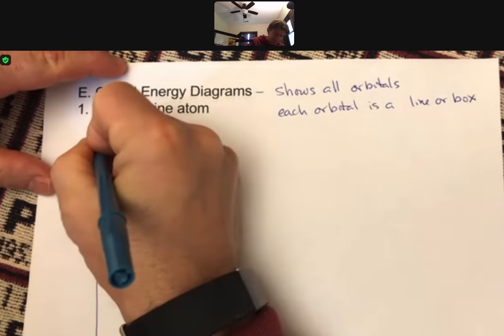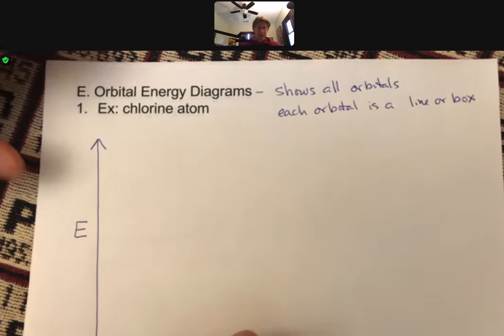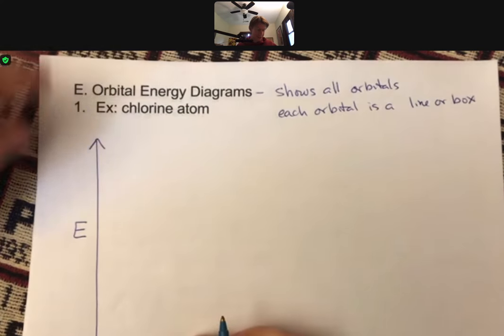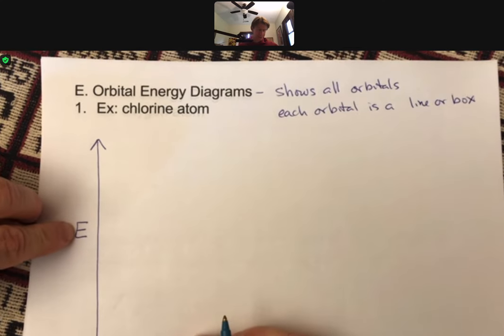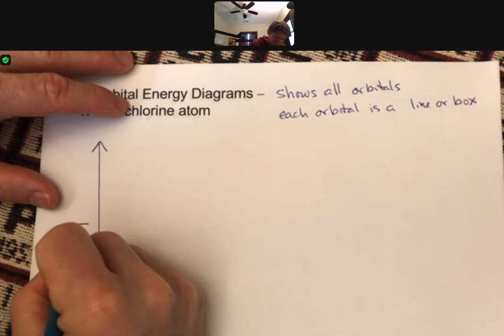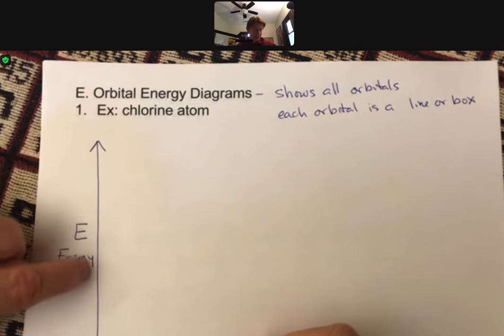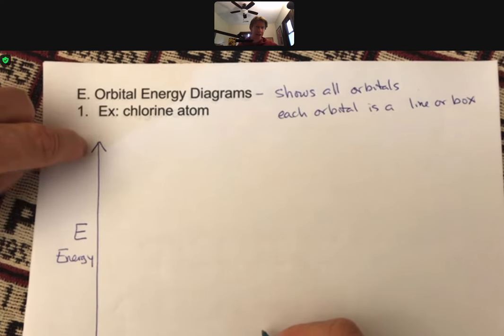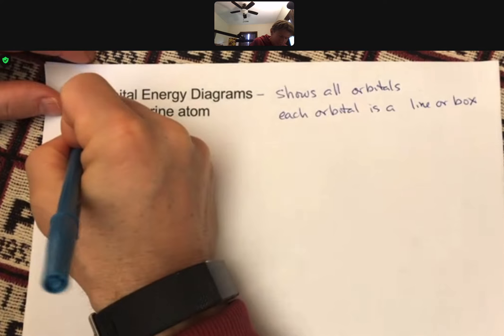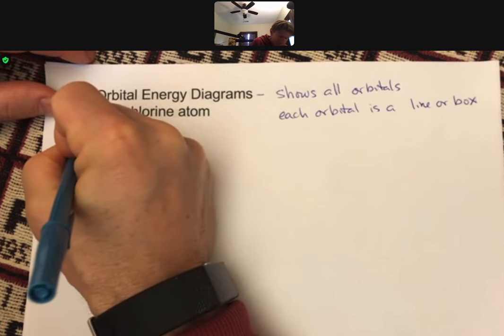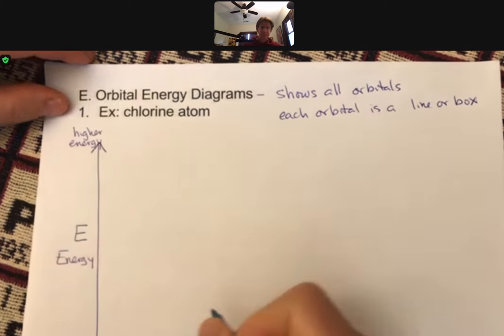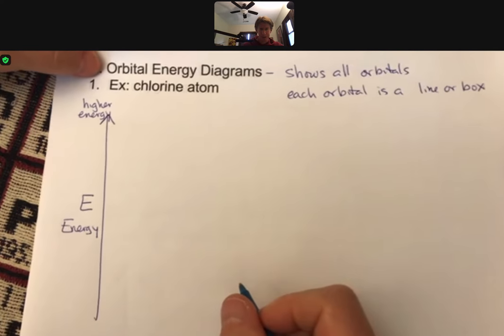So there's a big arrow here, and the arrow in the E stands for energy. And the higher you go, there's higher energy. So this is just going to be higher energy. And that means lower energy is going to be all the way at the bottom.